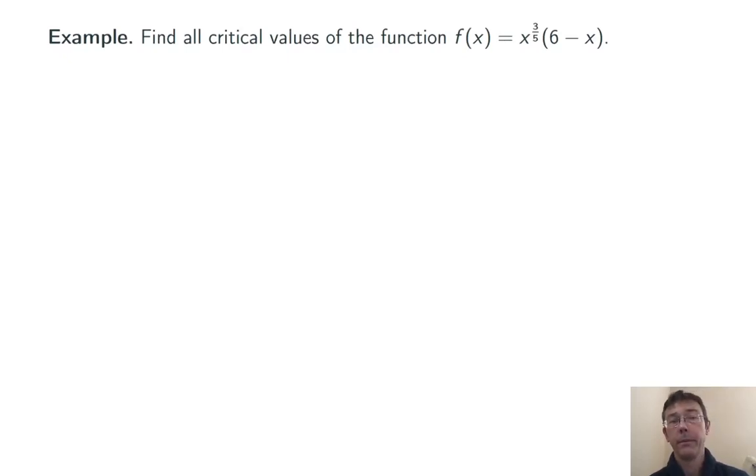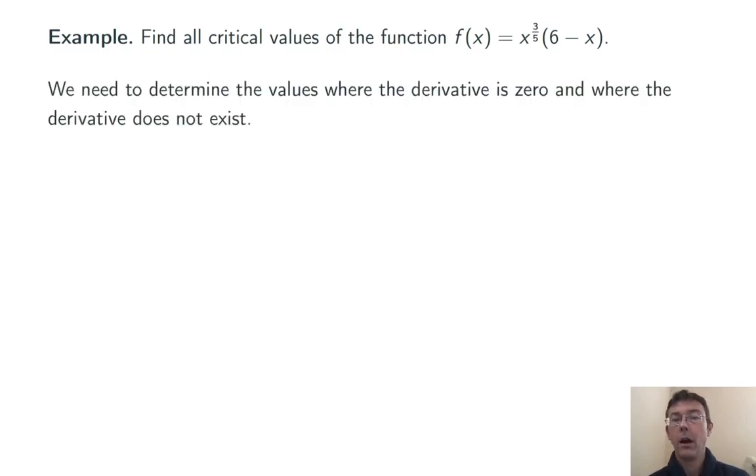Here's another example. Find all critical values of the function f(x) equals x to the 3/5ths times (6 minus x). Our process here is going to be exactly the same. We're going to differentiate, see where the derivative is 0, and where it's not defined. In this case, we need a product rule. We differentiate x to the 3/5ths and multiply it by (6 minus x). Then we differentiate (6 minus x) and multiply it by x to the 3/5ths.